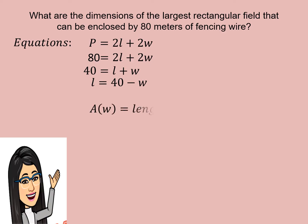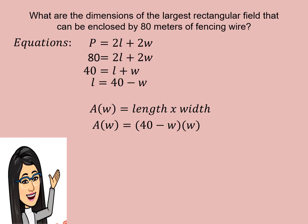Now, using the idea of area, we can write the function as A(W) is equal to L times the width. Let us substitute the representations for length and width. We will get A(W) is equal to (40 minus W) times W, which simplifies by the distributive property to A(W) is equal to 40W minus W squared. Arranging in standard form: A(W) is equal to negative W squared plus 40W.